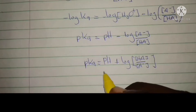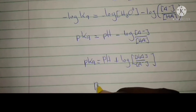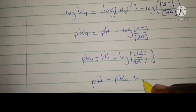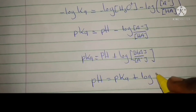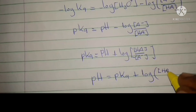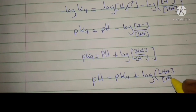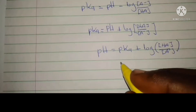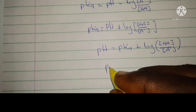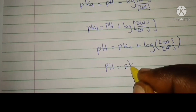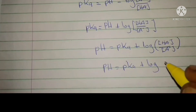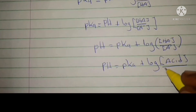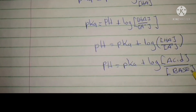Making pH the subject, we get pH equal to pKa plus log of the concentration of the acid divided by the concentration of the conjugate base — or pH equal to pKa plus log of the base over the acid. This second-to-last equation is the Henderson-Hasselbalch equation.